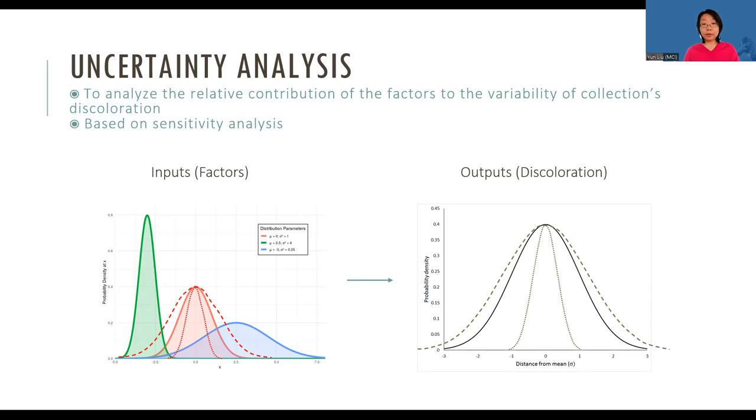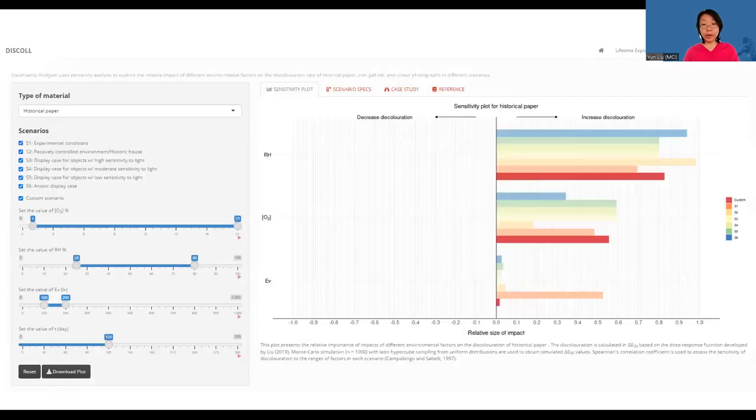This is the interface you will see when you click on uncertainty analysis. It has the same layout as a lifetime prediction. The difference is that for uncertainty analysis, the output is a bar plot showing the direction of the impact of each factor, and the relative impact size of each factor.